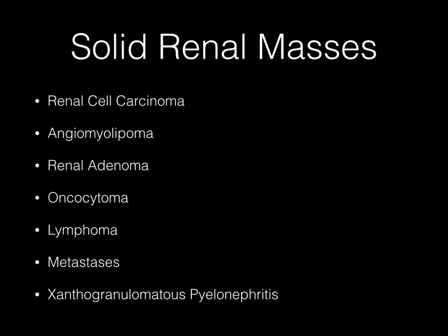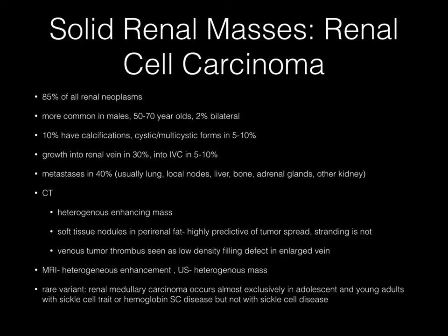Now we will go through the following solid renal masses. Starting with renal cell carcinoma — it comprises a majority of all renal neoplasms, is more common in men, with an age range of about 50 to 70 years, and 2% are bilateral.